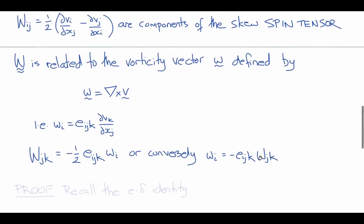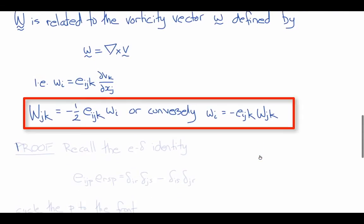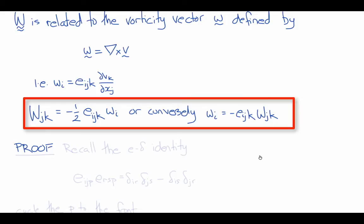So to prove this, we need to use the E-delta identity that we introduced earlier. Now, the way that we wrote the E-delta identity was Eijp Ersp equals delta ir delta js minus delta is delta jr.